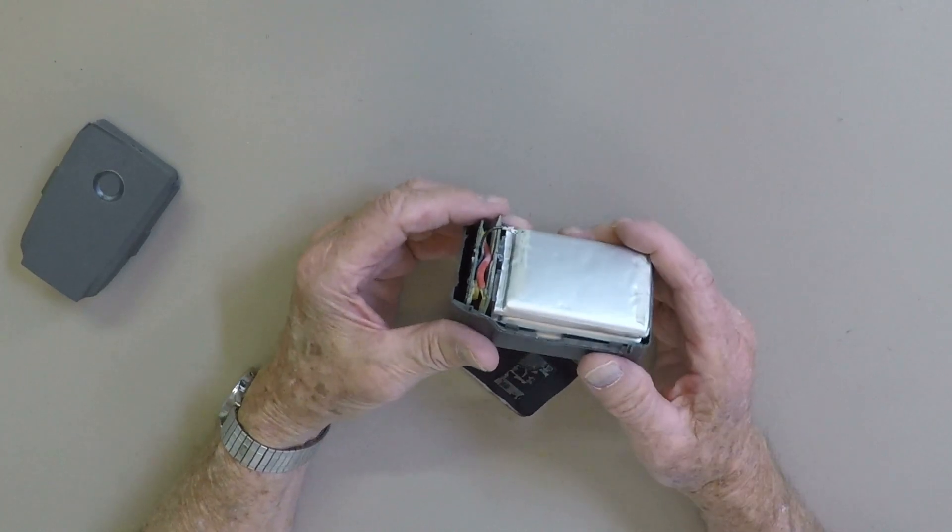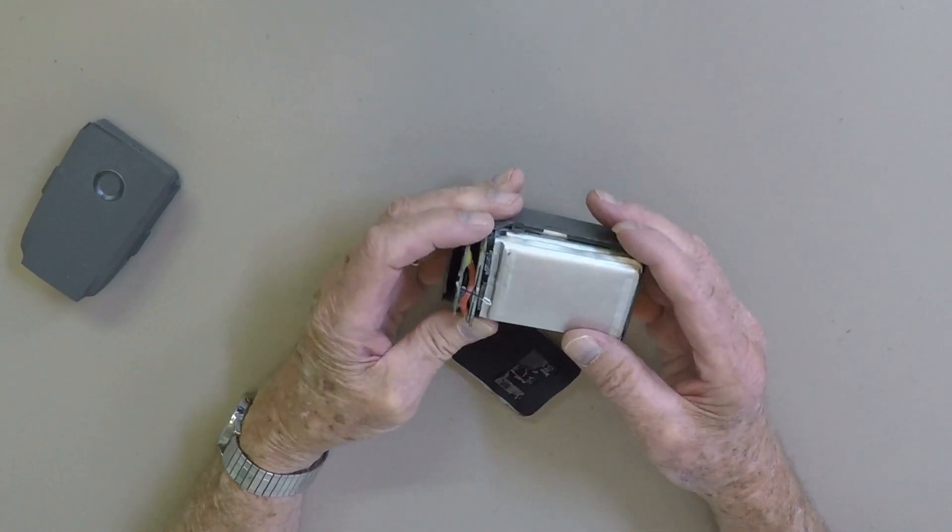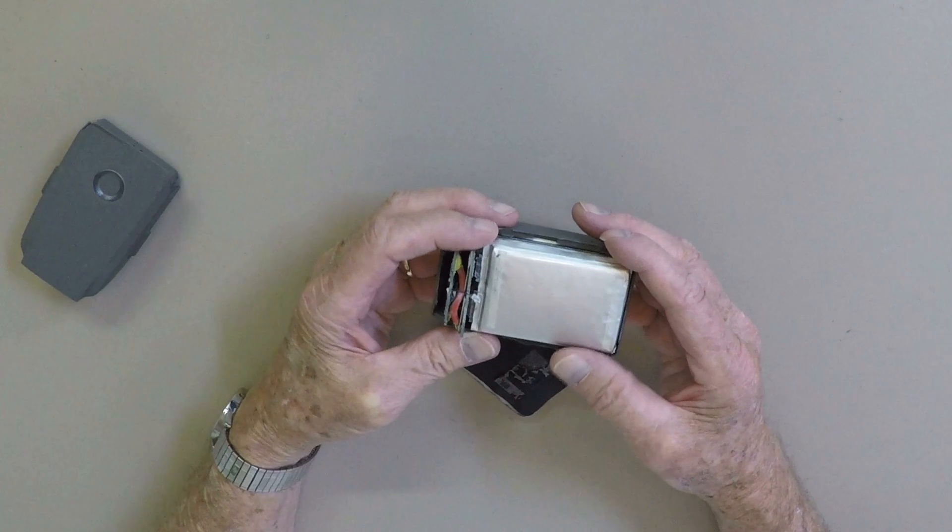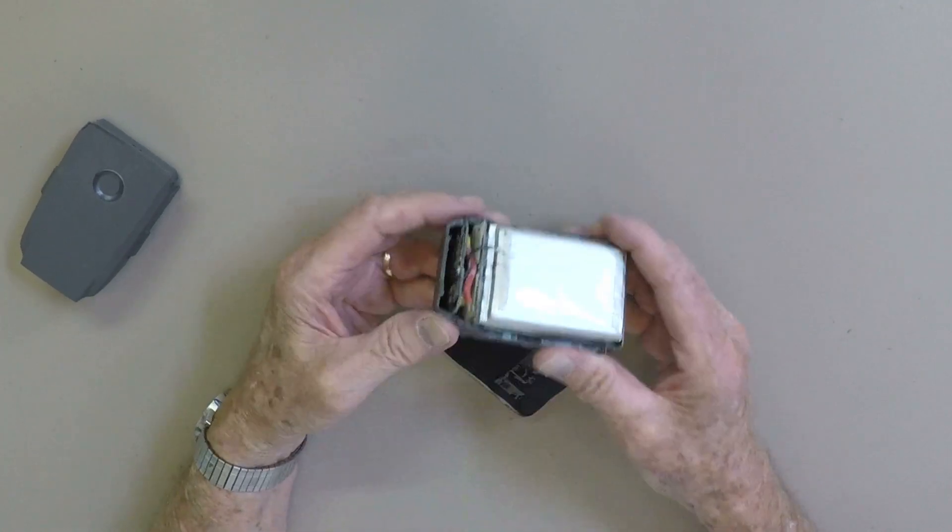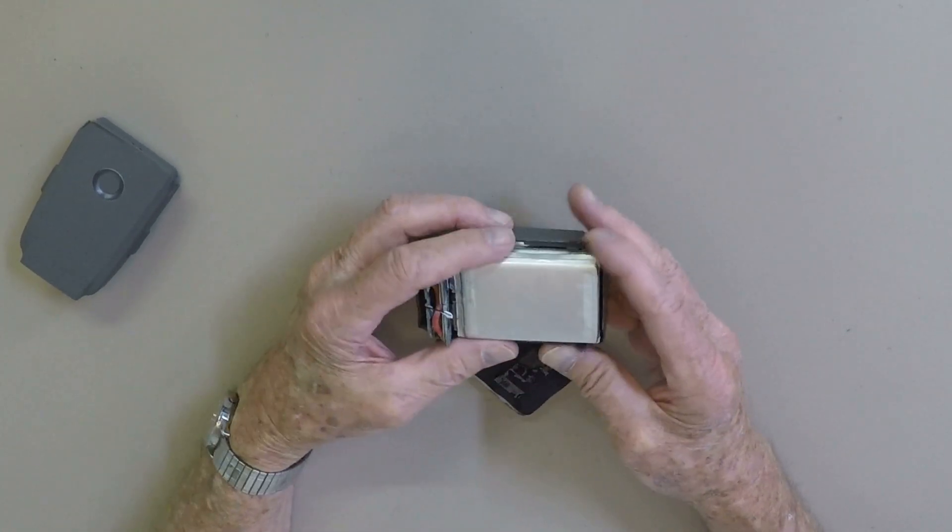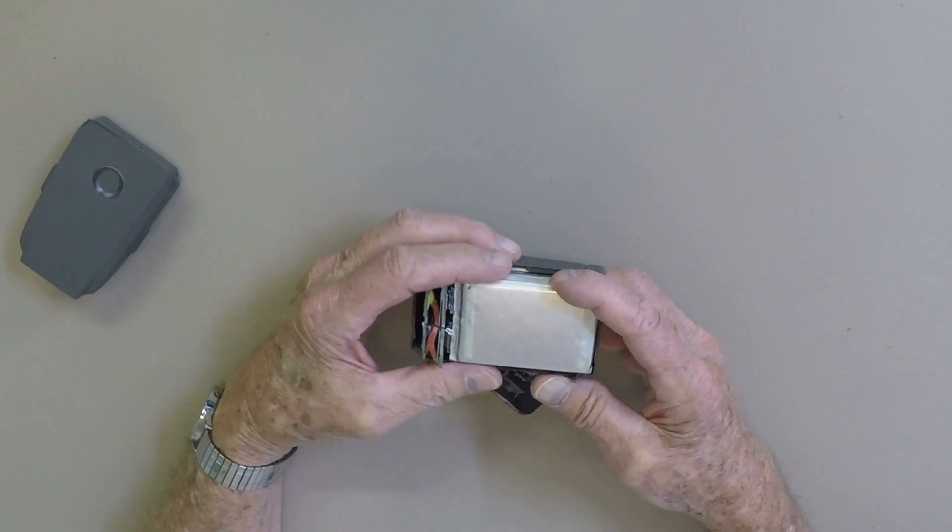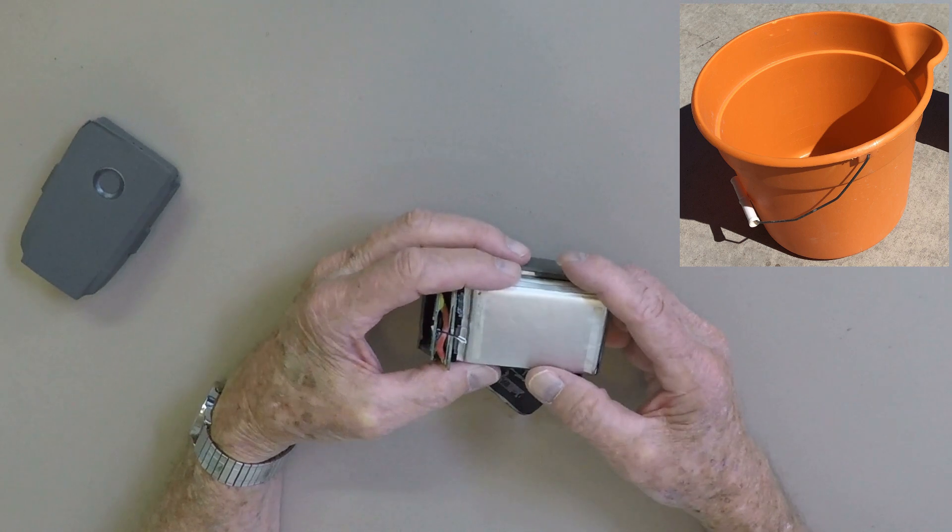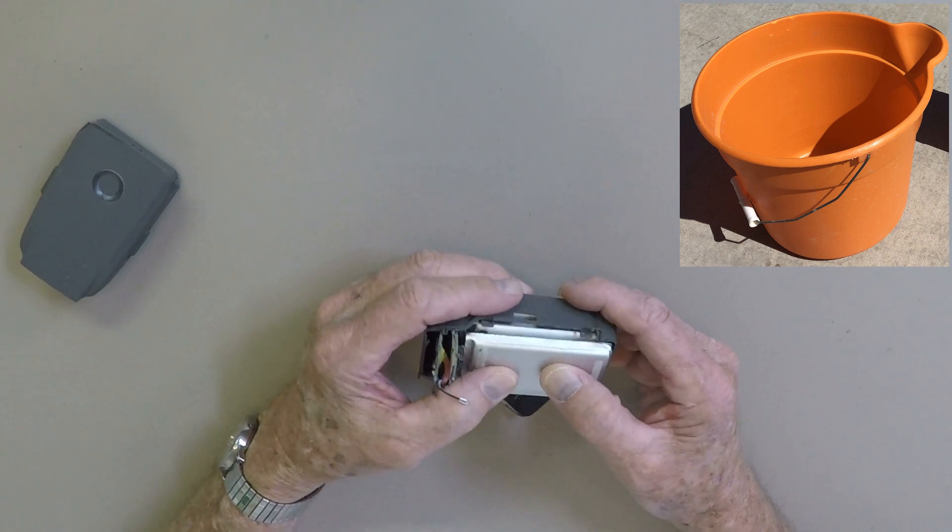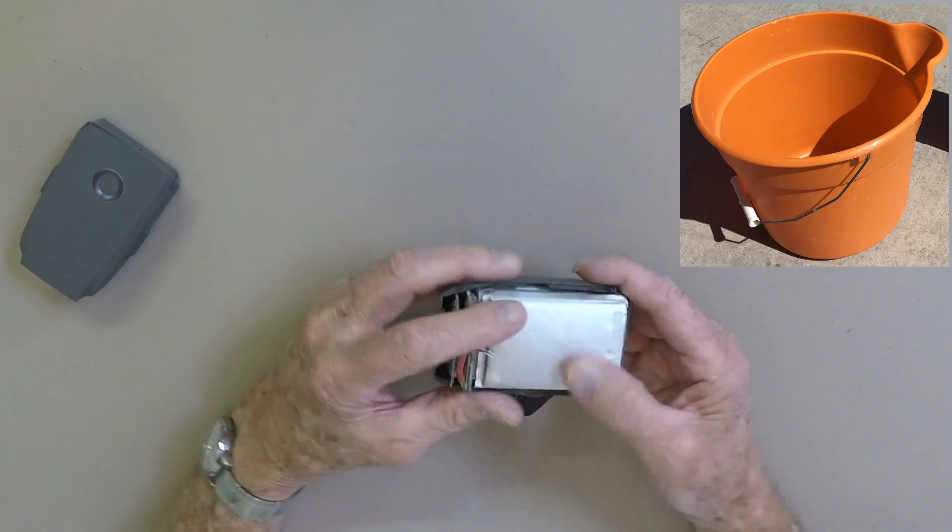And what I did was I first started by just splitting it in half, and then when I saw what was in there, I put it in the bucket for 24 hours. And I just put a couple of tablespoons of salt into about a half a bucket, the bucket that you saw, about half full.